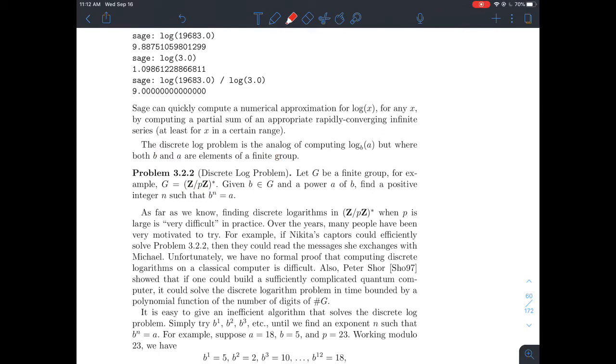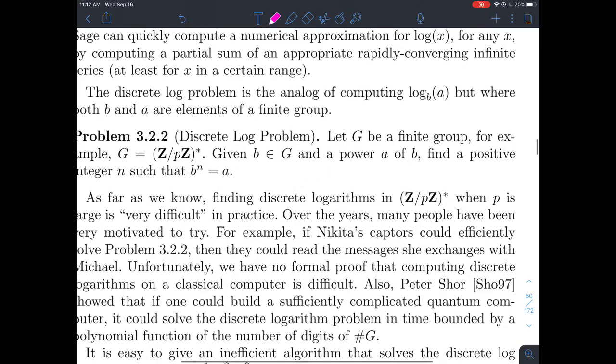This idea of how do you find this exponent is called the discrete logarithm problem. So if you've got a finite group G, and typically we will play with Z mod P star. Given an element B and G, and if you're given a power A of B, so A is like B to the N, could you recover what N is? Could you figure out what N is? And now, what we're saying to do is, yeah, you take log of both sides, right? And then you get your N. But the point is, it's very, very hard to do whenever your A's and your B's come from a finite group like this.